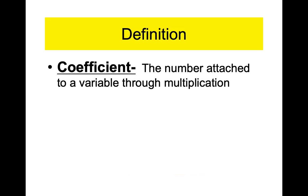You need to write this down — that means everyone, including people doing their homework. Stop right now. This is new. Brand new. We're talking about something called a coefficient. A coefficient is a number that is attached to a variable through multiplication. It could be positive or negative. Two is the coefficient in 2x.